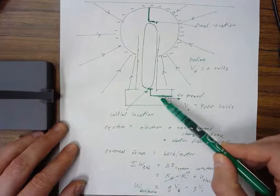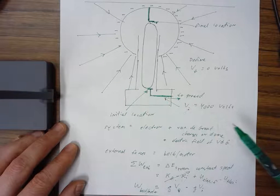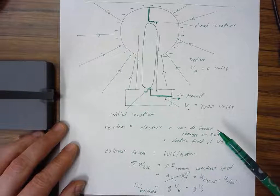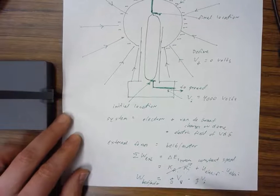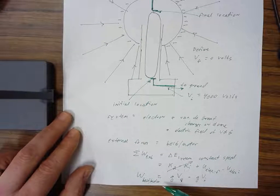So the ground and this metal terminal are at 4000 volts. We're almost done. We're going to calculate the work done by the belt and motor.